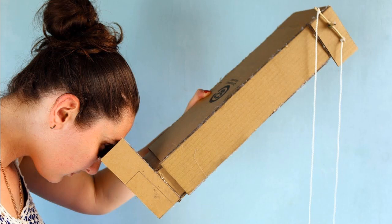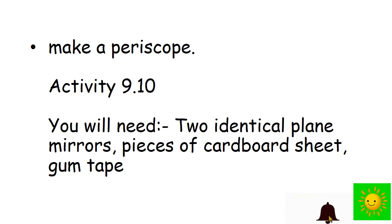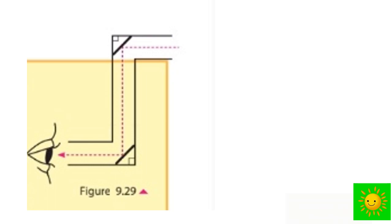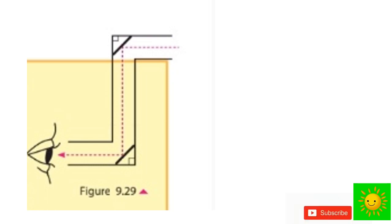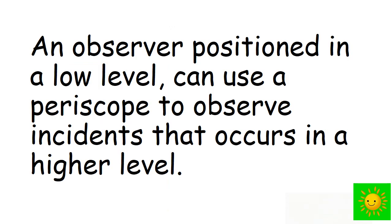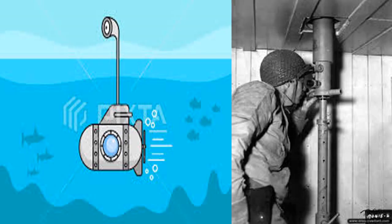A periscope is another instrument that makes use of the phenomenon of reflection of light through plane mirrors. Let's make a periscope. We have to use two identical plane mirrors, pieces of cardboard sheet, and contact adhesive. Make tubes of appropriate size using the pieces of cardboard sheet. Construct the equipment as shown in this figure and place the pieces of mirrors at an angle of 45 degrees at each bend. Get the assistance of your teacher for this construction. Observe objects through the instrument you made. An observer positioned at a low level can use a periscope to observe incidents that occur at a higher level. This is commonly used in submarines and bunkers.